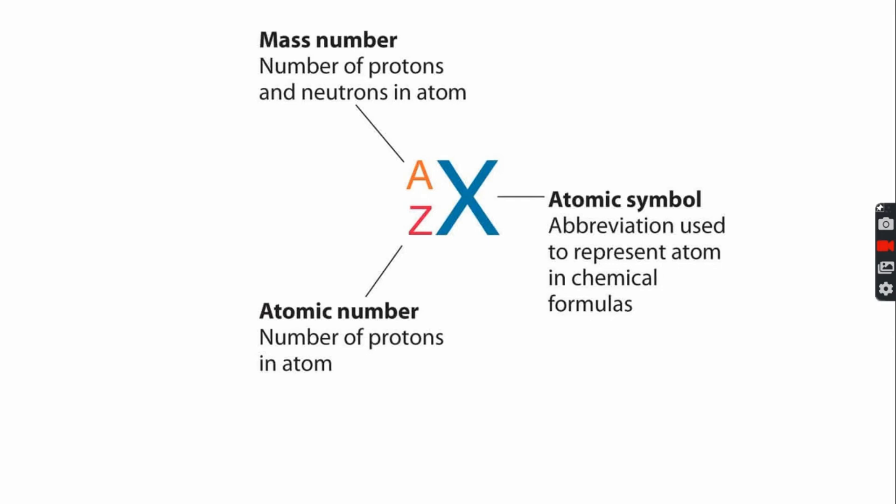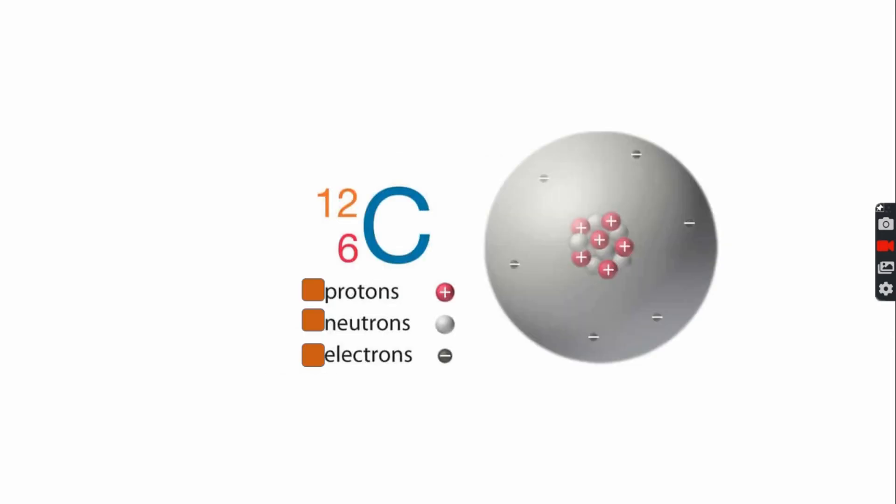Now, let's practice. Here I have a carbon atom. We have numbers 2, 6 and 12. The question is, how many protons does a carbon atom have? How many neutrons and how many electrons? You have 10 seconds to answer.